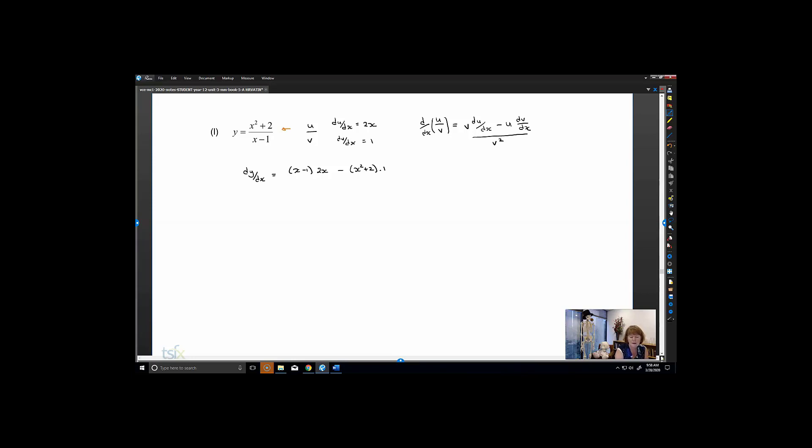And we're dividing all of that by our x minus 1 all squared. So you notice that we have v du/dx minus u dv/dx over v squared. That's what we're looking for.